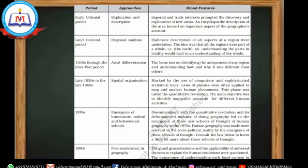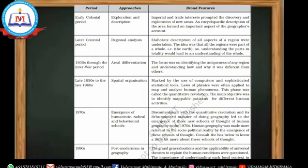The humanistic school of thought deals with different aspects of the social well-being of people. The radical school of thought represents the leftist view, based on Marxian theory, addressing social inequality and deprivation in society — that is the radical school of thought.